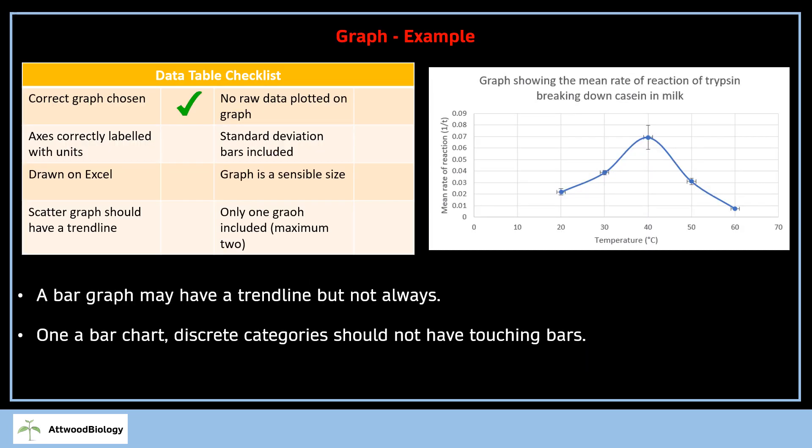On to the graph. You need to make sure you choose the correct graph. If you have discrete categories, it's probably going to be a bar graph with discrete categories along the bottom. If you have numerical values on your X and Y axis, it's likely a scatter graph or line graph. Make sure the axes are correctly labeled with units. You can see we've got mean rate of reaction here, 1 over T, temperature in degrees C. I've used Excel to draw the graph with a trend line curve. I haven't plotted any raw data on the graph—too many times I get an IA with 5, 6, 7, 10 graphs.